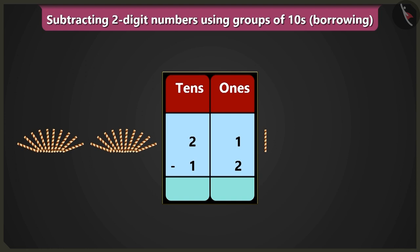But we cannot subtract two from one in the box of ones. So we will borrow one ten from two tens from the box of tens. Yes, now we will write eleven ones instead of one in the box of ones, and we will write one ten instead of two tens in the box of tens.